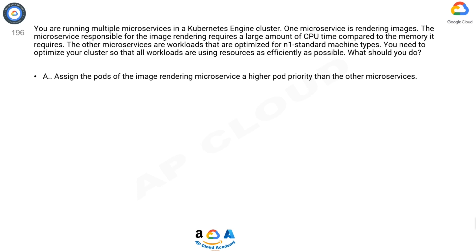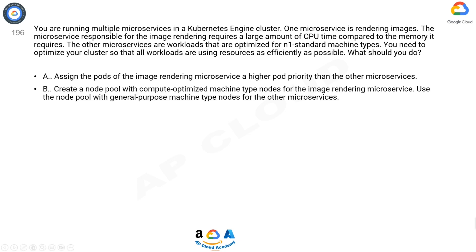A. Assign the pods of the image rendering microservice a higher pod priority than the other microservices. B. Create a node pool with compute-optimized machine type nodes for the image rendering microservice. Use the node pool with general-purpose machine type nodes for the other microservices.